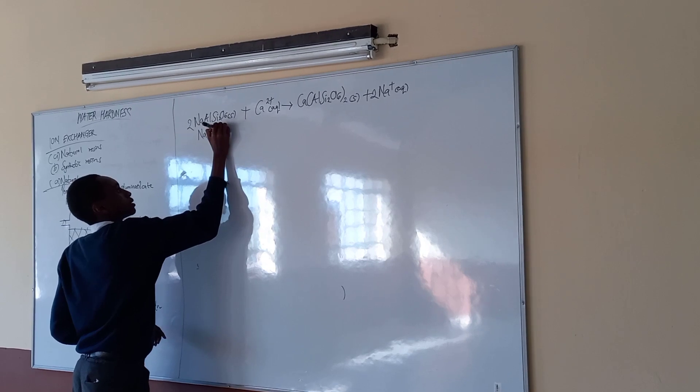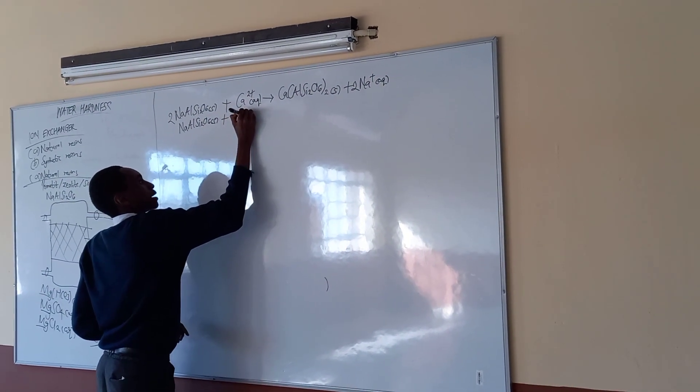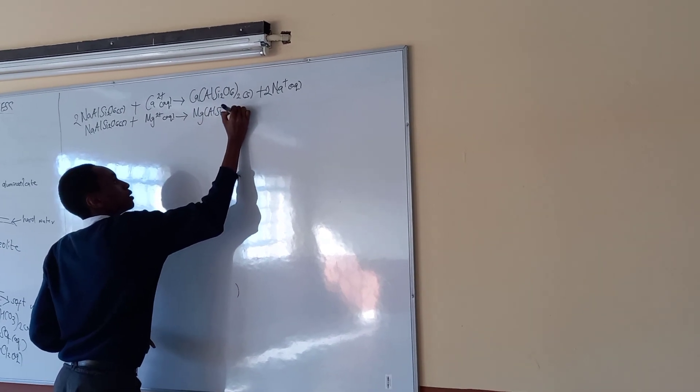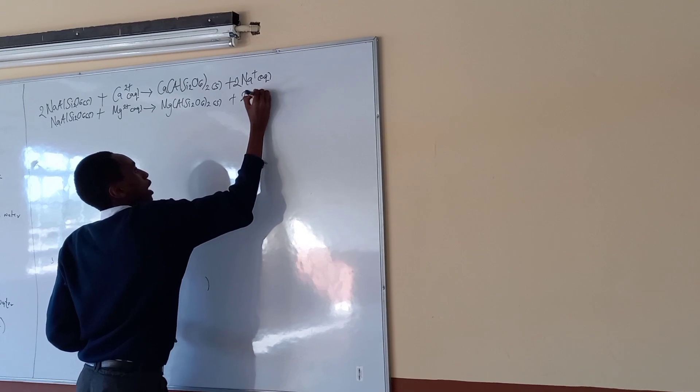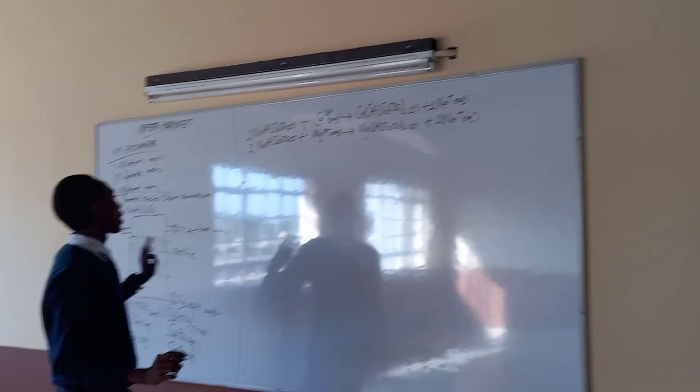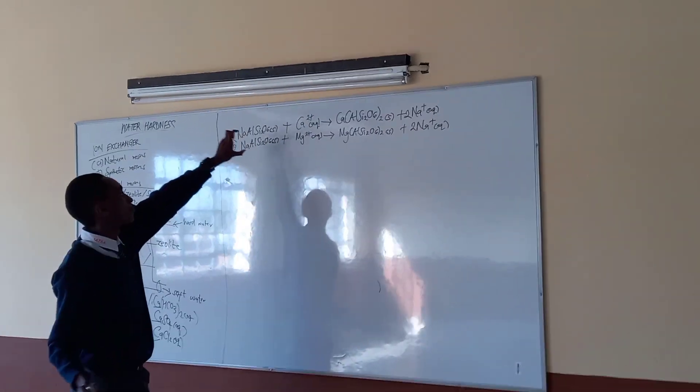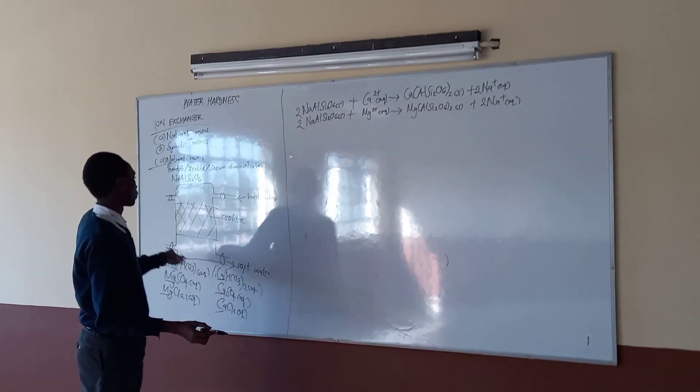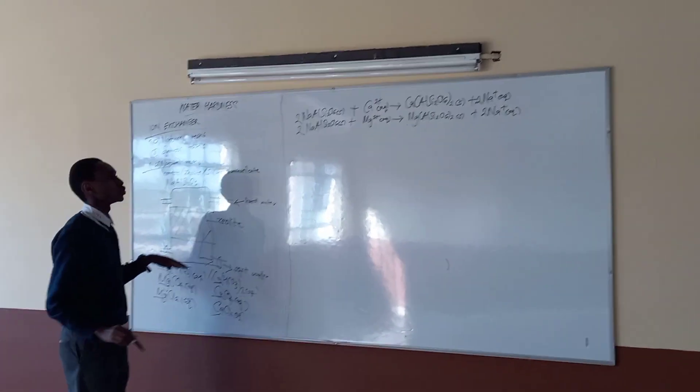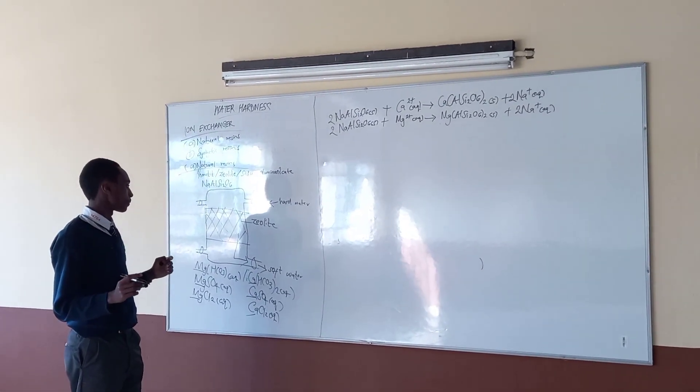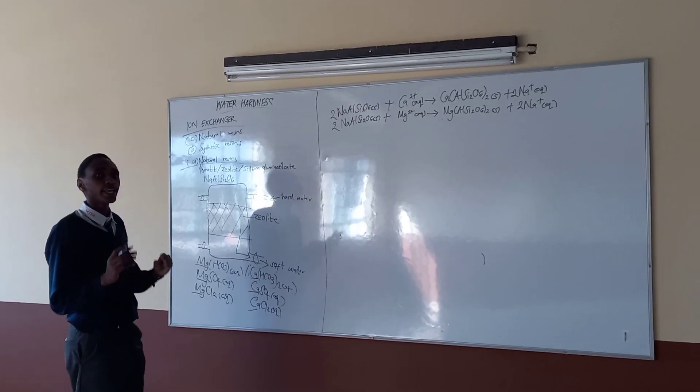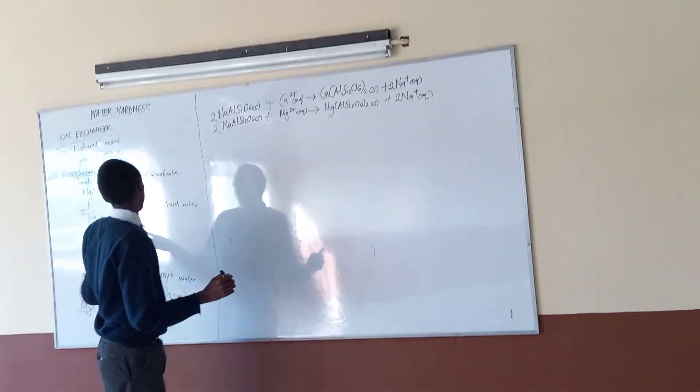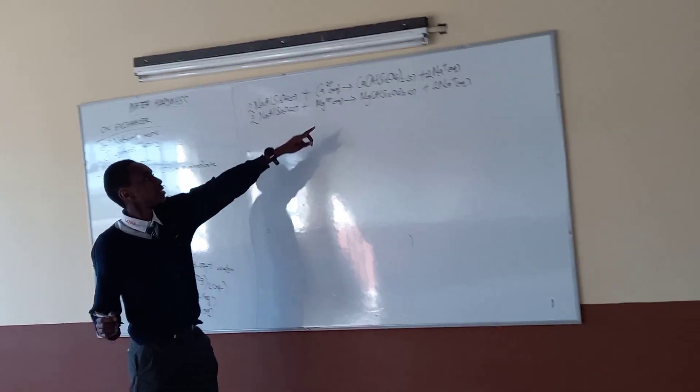Sodium aluminum silicate solid plus magnesium ions aqueous. We get to have magnesium aluminum silicate solid plus two sodium ions aqueous. Simply, that is how we do it. We get to remove the cation from the water. And the cation will remain in the tank while sodium ions will get to flow with the water. So as the water flows in this direction, it will be soft water. But what happens is, in the course of time, the zeolite is depleted. So how do we get to restore the zeolite?